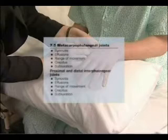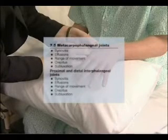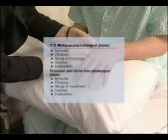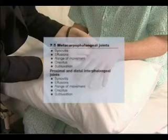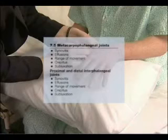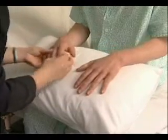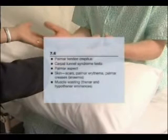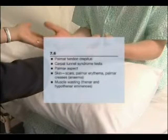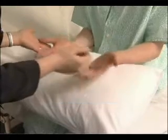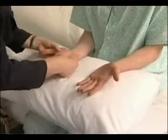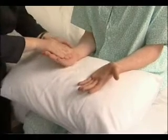Then palpate the metacarpal and proximal and distal interphalangeal joints. Now turn the hands over and examine the palmar surfaces. Feel for the rough movement of thickened palmar tendons by asking the patient to open and shut the hand. Open and close your hand for me.